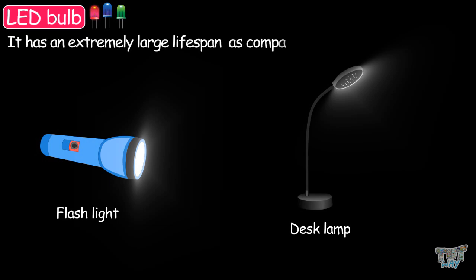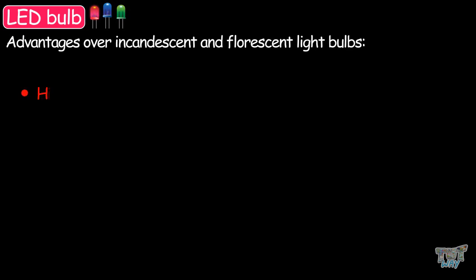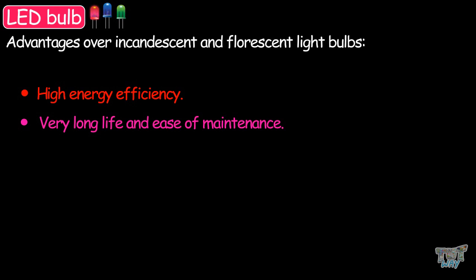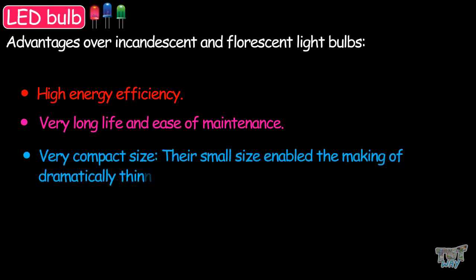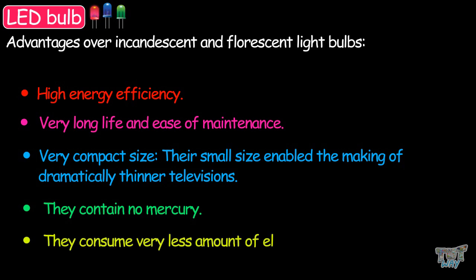The LED has an extremely large lifespan compared to the incandescent bulb. They have a lot of advantages over the incandescent and fluorescent bulb. They have high energy efficiency, very long life, ease of maintenance, and very compact size. Their small size enables the making of dramatically thinner televisions. They contain no mercury. They consume a very small amount of electricity.